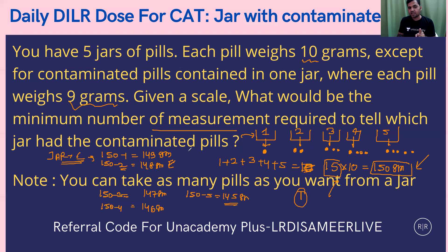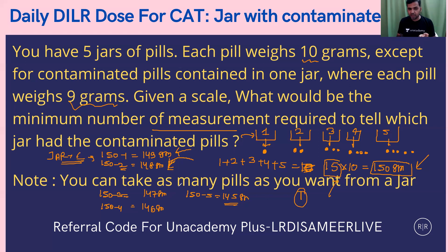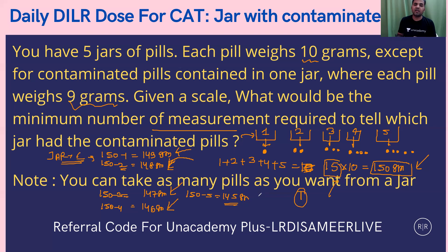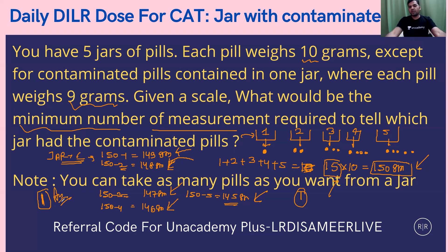If the weight is 149 grams, jar number 1 contains the contaminated pill. If 148 grams, jar number 2. If 147, jar number 3. If 146, jar number 4. If 145 grams, jar number 5 contains the contaminated pill. So the minimum number of measurements required is only one — that is the correct answer to the question. A beautiful concept.